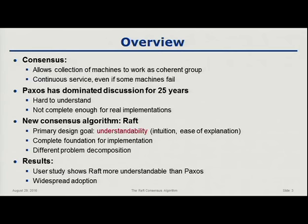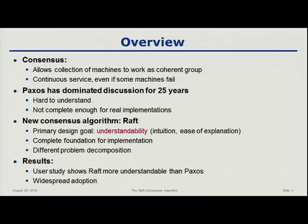The problem with Paxos is it's really, really hard to understand and wrap your mind around. Furthermore, the basic version of Paxos that everybody starts with really only solves a tiny part of the problem you need to solve if you're going to use consensus algorithms. So it's proven really difficult to build systems based on Paxos over the last 25 years — many people have tried and it's been very, very difficult.